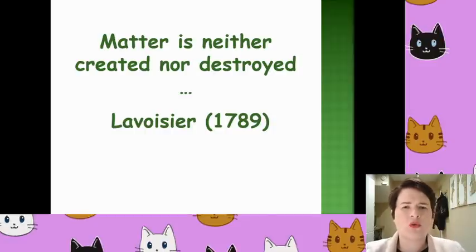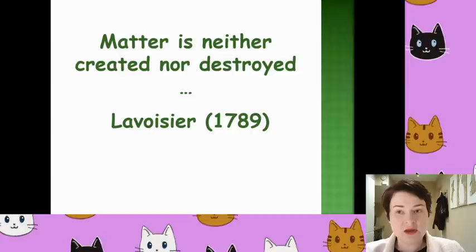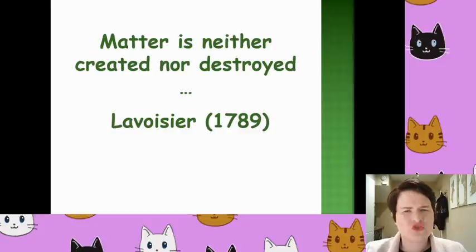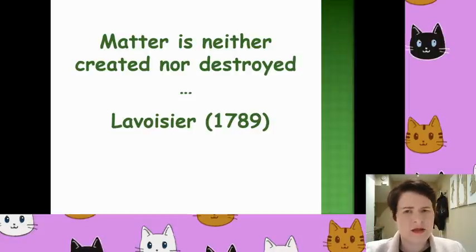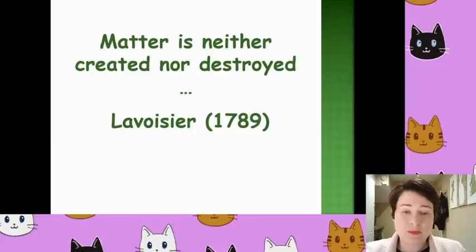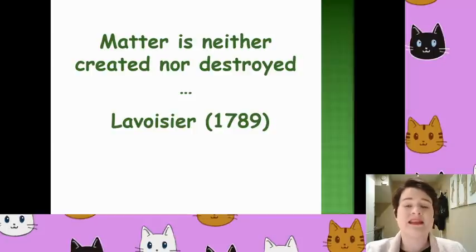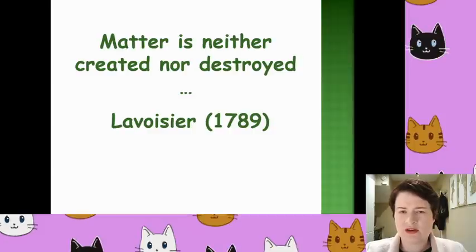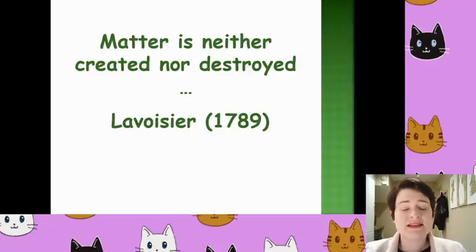When we take a lump of coal and burn it to give off heat energy, the chemical energy inside the coal — the energy store as physics describes it — goes from a chemical store and is given off as thermal energy. The carbon that was in the coal still exists, but in a slightly different form. It is no longer carbon soot or charcoal; it has reacted with oxygen and been given off as carbon dioxide.